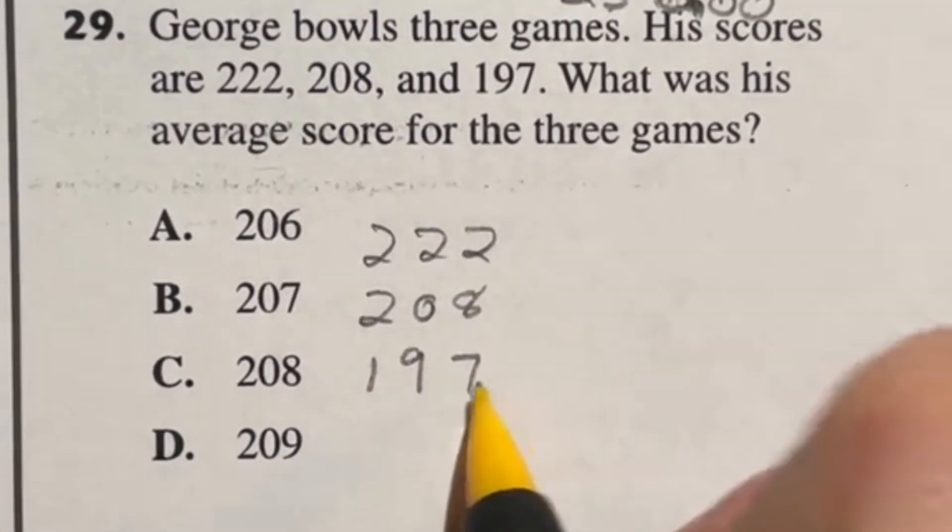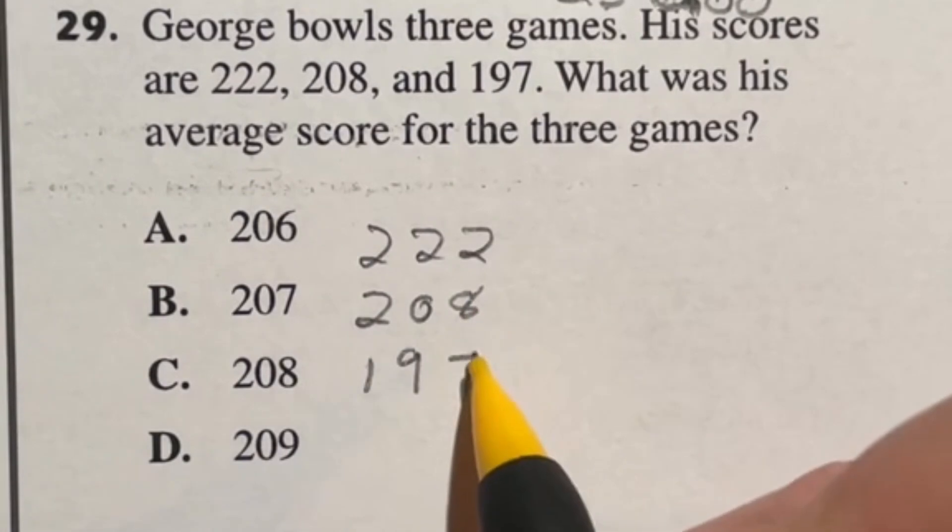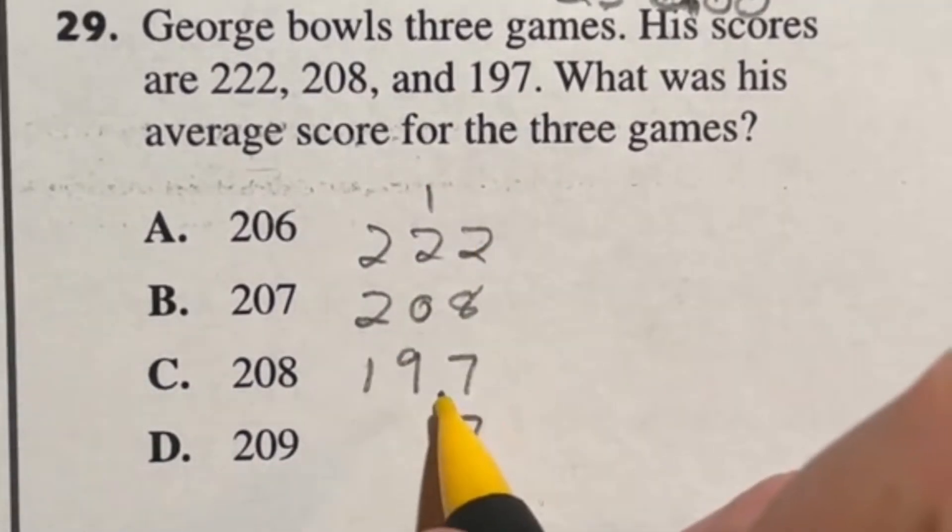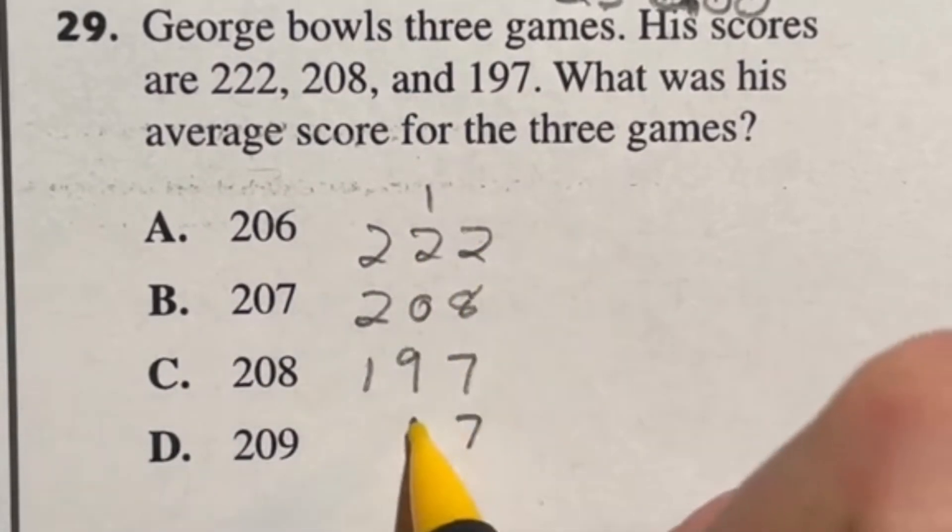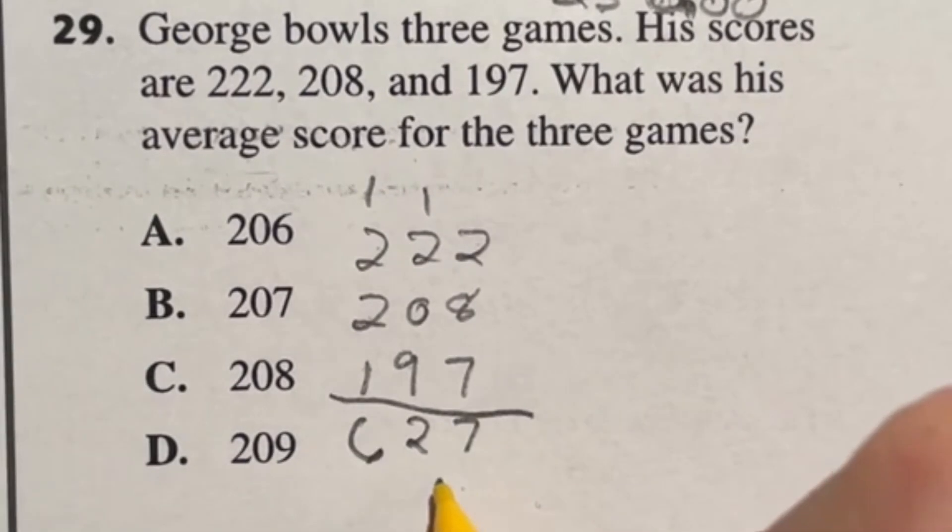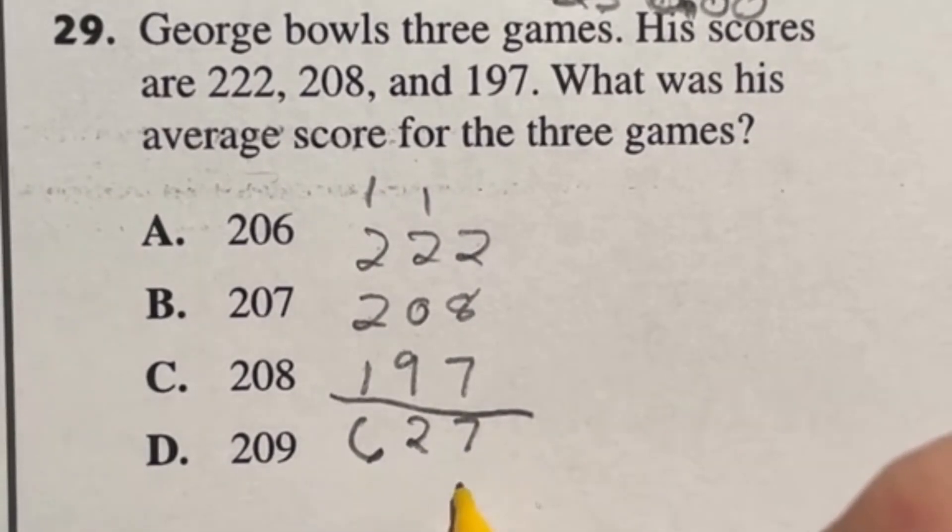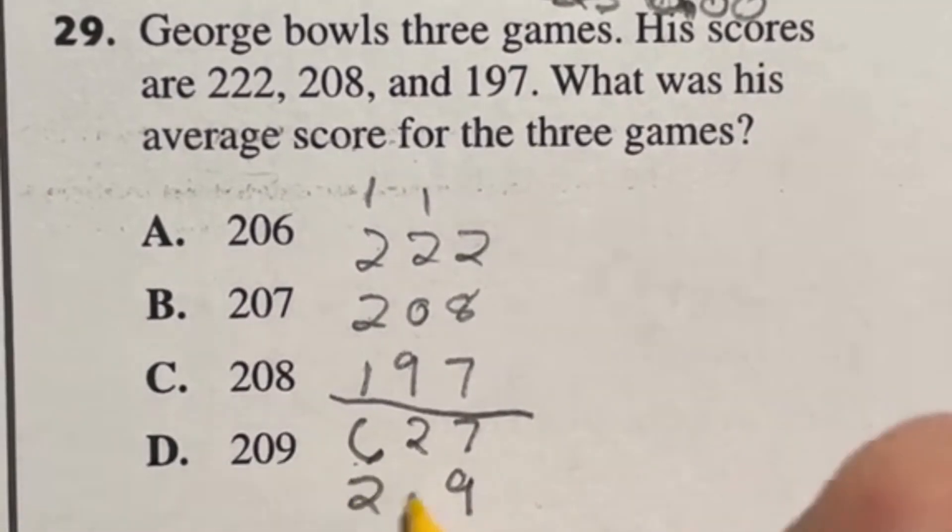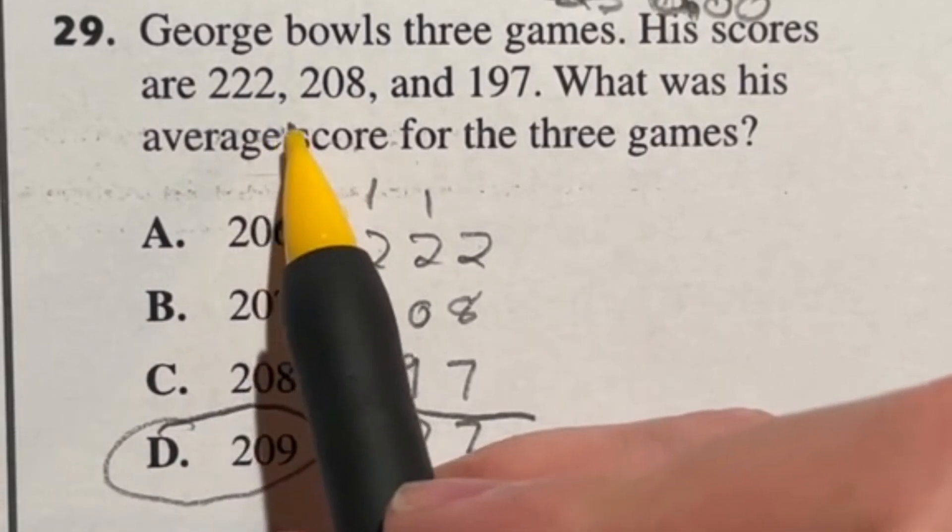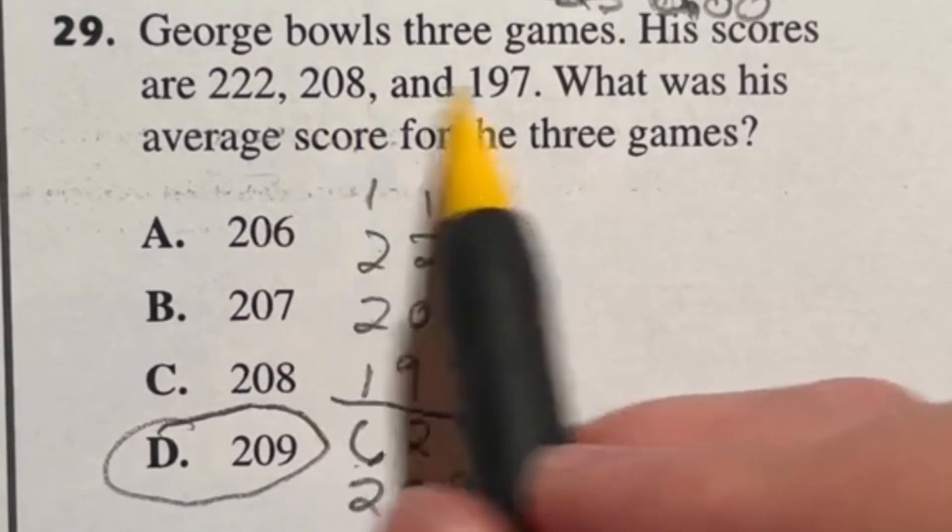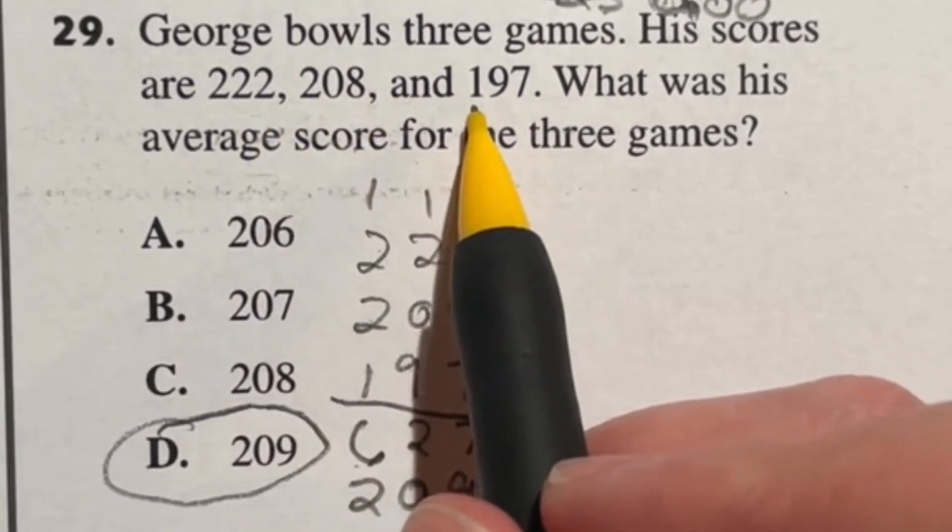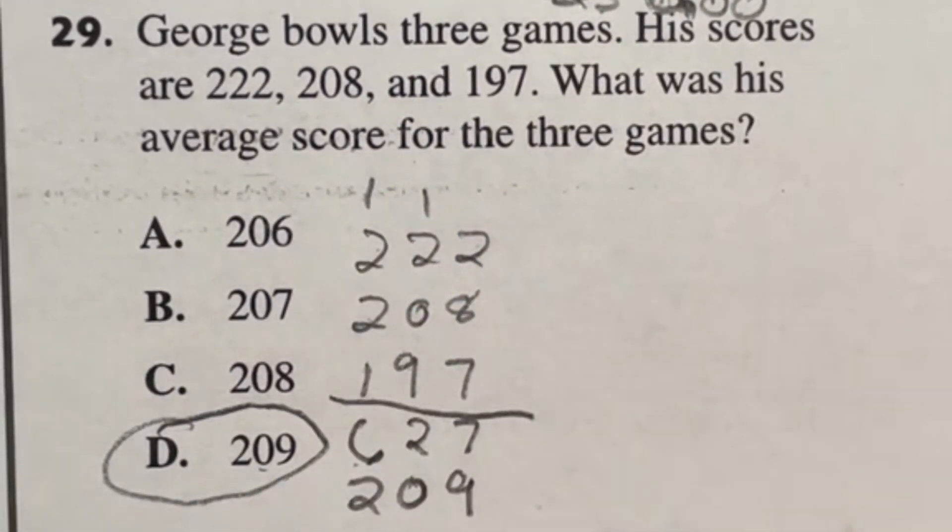Seven and two is nine, plus another eight is 17, carry the one. Nine and one makes 10, plus two more is 12, carry the one. Then we have 2, 3, 4, 5, 6 for 627. If we divide this by three, 27 divided by 3 is 9, and 6 divided by 3 is 2. So we have 209. That's answer D. There are other ways you can do this, like balancing out, saying 208's in the middle, let's add some here to go the other way. But our final answer here is D, 209.